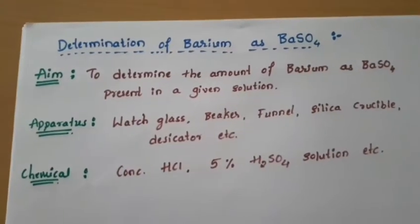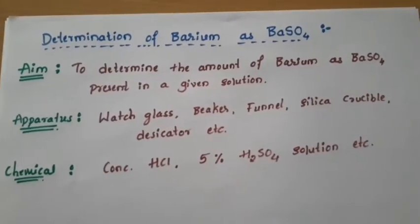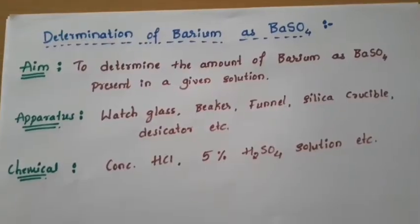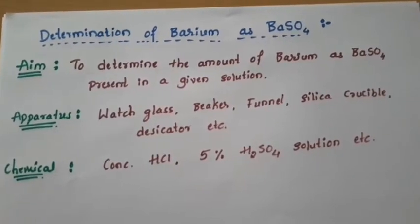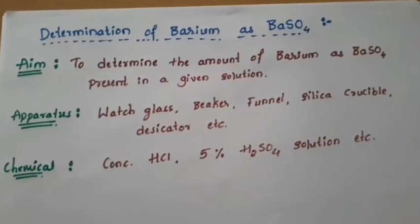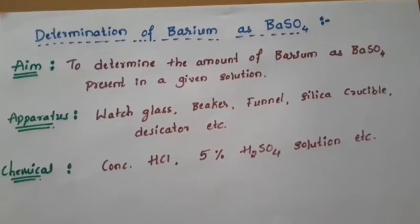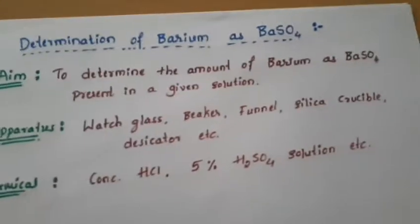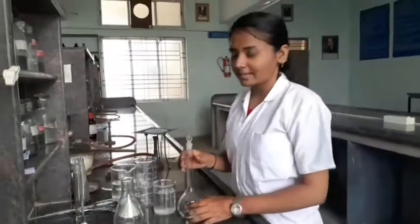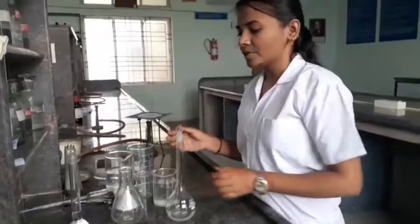The aim of this experiment is to determine the amount of barium as barium sulfate present in a given solution. The apparatus required includes a watch glass, beaker, funnel, silica crucible, desiccator, etc. Chemicals required are concentrated HCl and 5% H2SO4 solution, that is sulfuric acid solution. Let's start the practical — these are all the apparatus we are using.